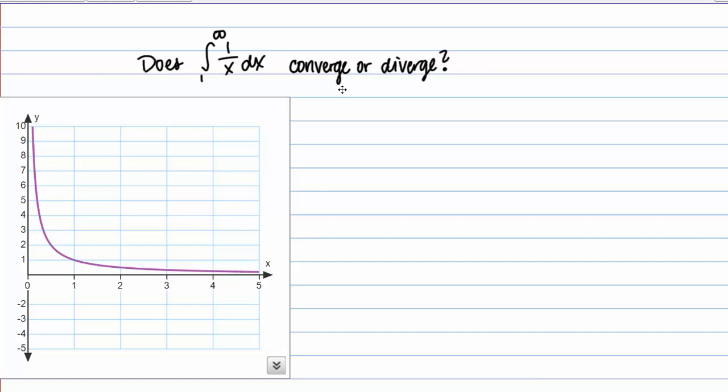So what are we asking here? Well here in this graph I have drawn the function f of x equals 1 over x. So the definite integral from 1 to infinity of 1 over x represents the area bounded by the graph of 1 over x between the x values of 1 and infinity.